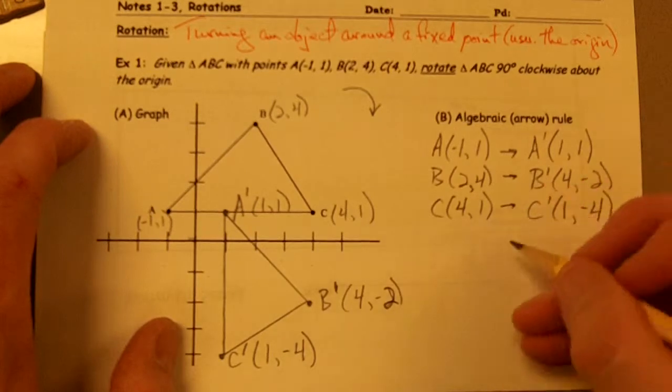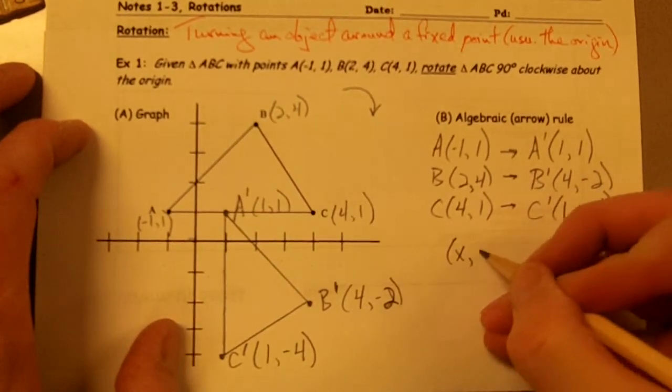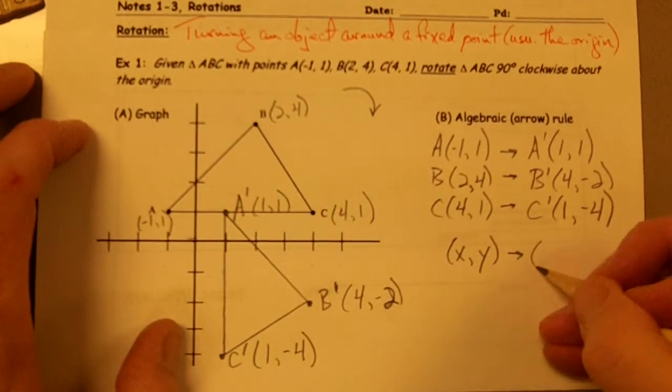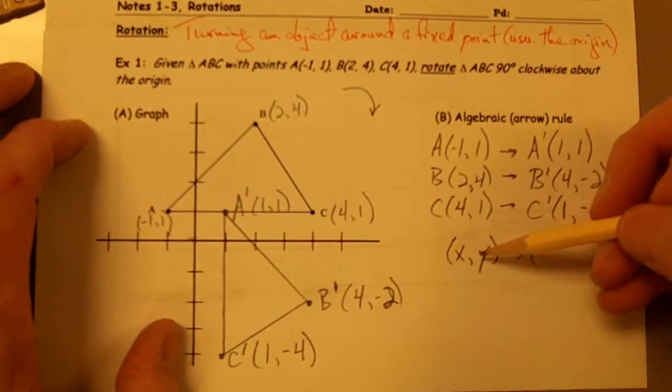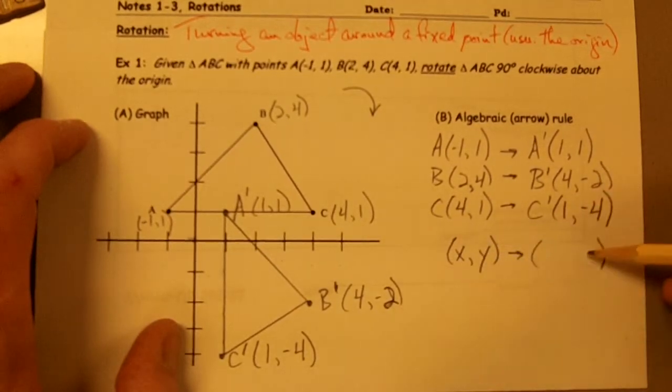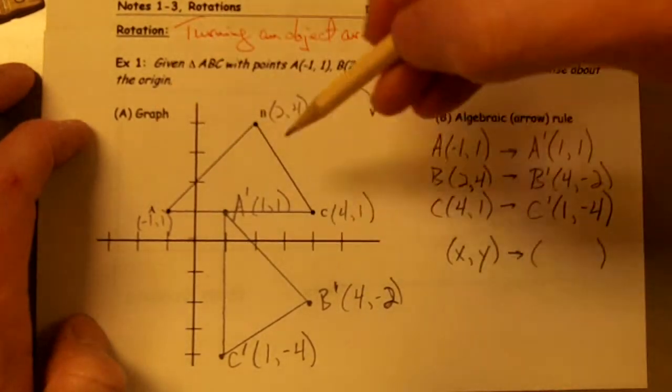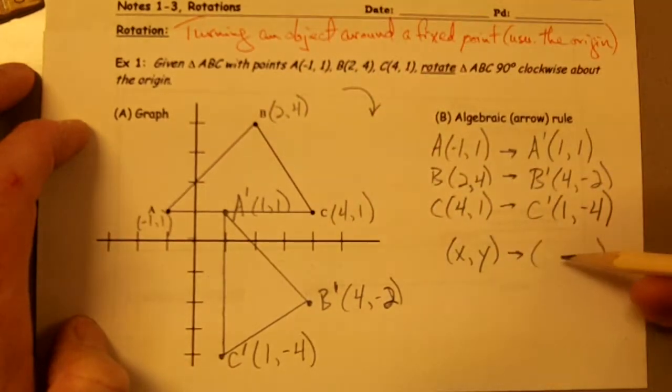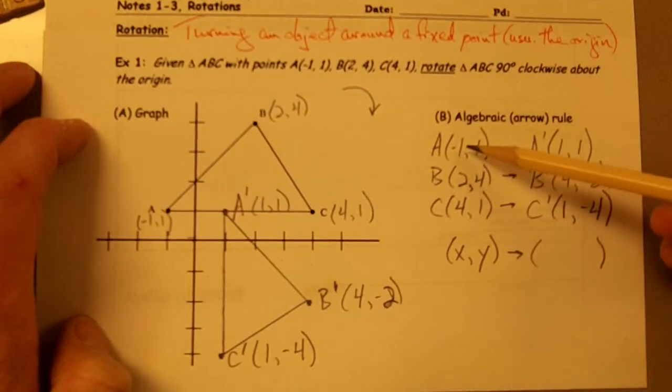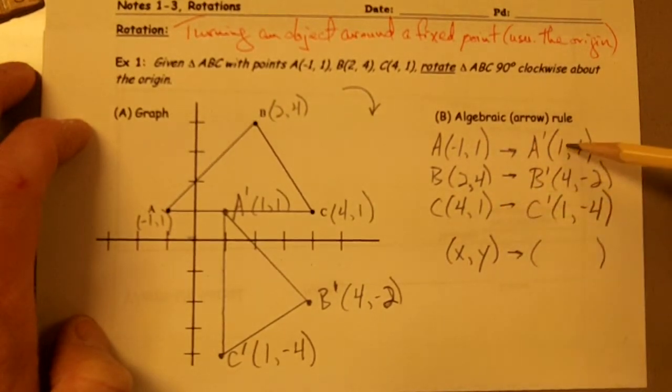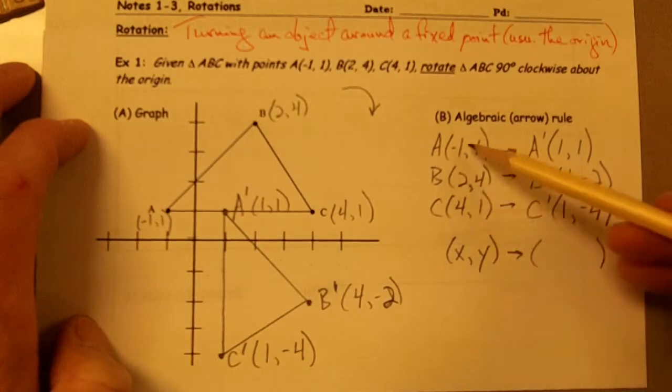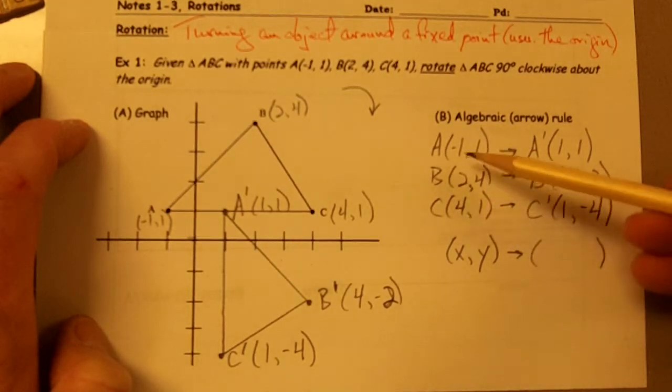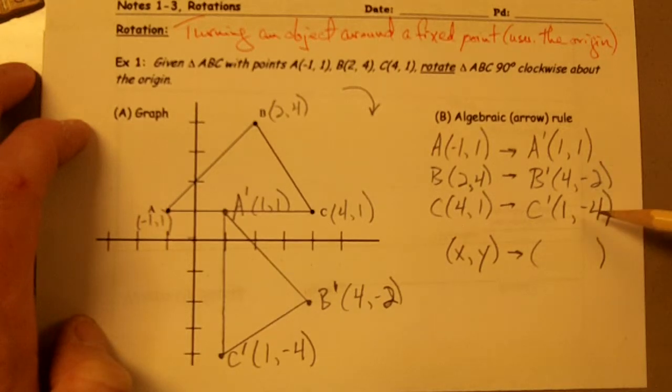So now, what I would like to do is write down the general rule for this particular rotation. In other words, if I take any pair of points, any set of X, Y coordinates, what do I have to do to them to get the rotated points? If I'm rotating them 90 degrees clockwise, what do I have to do to these coordinates to get the rotated coordinates? Well, when I look at my X and Y coordinates for these three points and what happened after I rotated them, it looks like all of my X values got moved over to become Y values, and yet the signs are different.